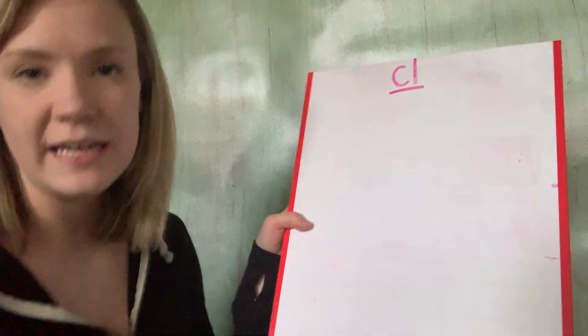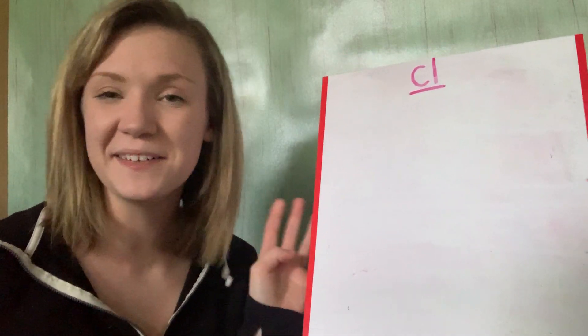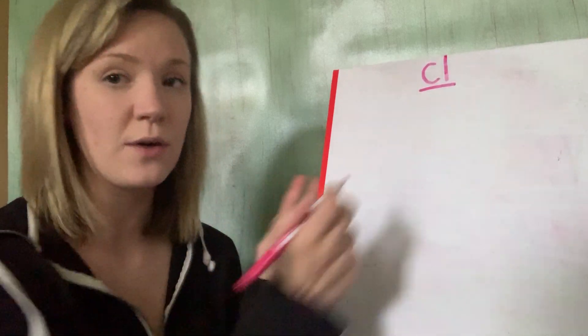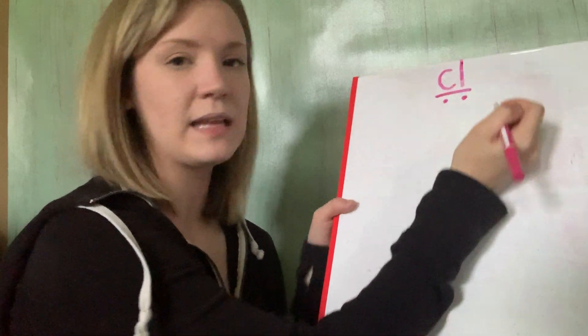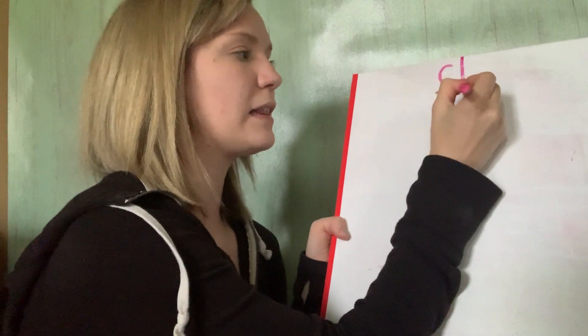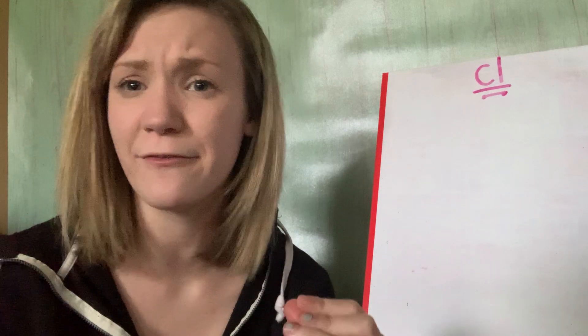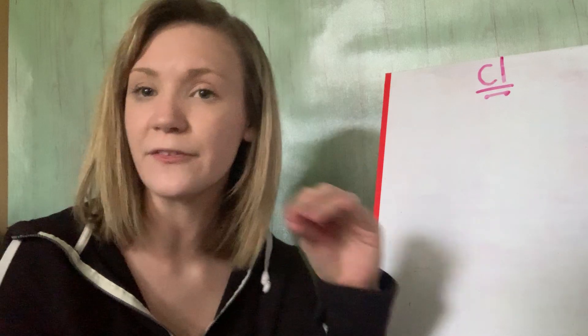So here is our first blend. It has a C and an L in it. So whenever we see a C and an L smashed together, it's going to make this new sound. So C says C, L says L. Let's put it together. Cool. Can you make that sound? Cool. Sounds kind of funky. But whenever we see a C and an L together, it's going to make that sound. Cool.